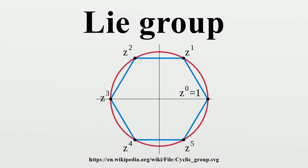There are several standard ways to form new Lie groups from old ones. The product of two Lie groups is a Lie group. Any topologically closed subgroup of a Lie group is a Lie group. This is known as the closed subgroup theorem or Cartan's theorem. The quotient of a Lie group by a closed normal subgroup is a Lie group. The universal cover of a connected Lie group is a Lie group. For example, the group R is the universal cover of the circle group S¹. In fact any covering of a differentiable manifold is also a differentiable manifold, but by specifying universal cover, one guarantees a group structure.